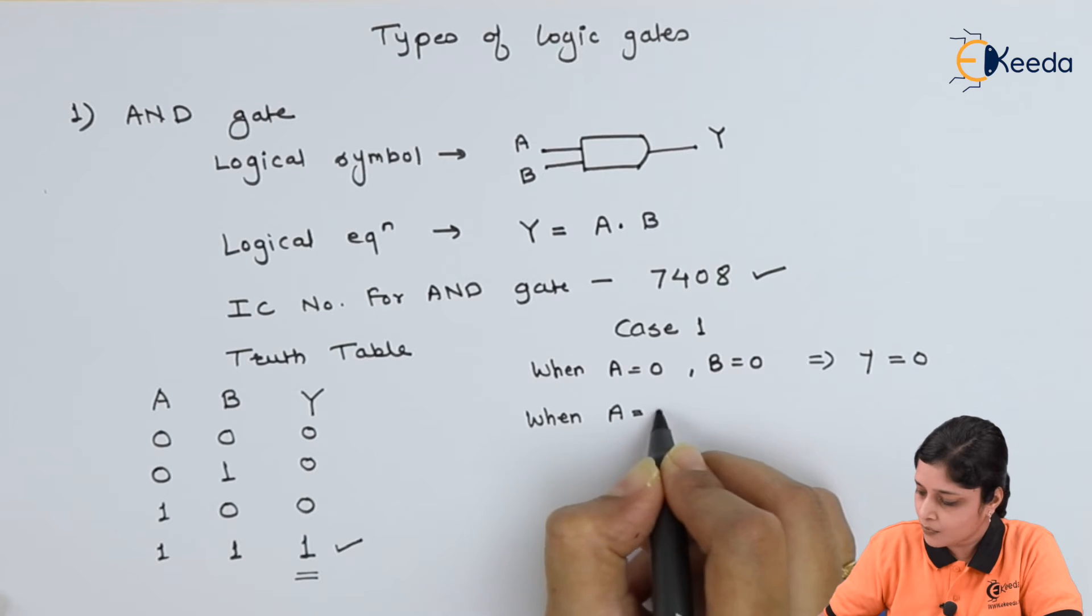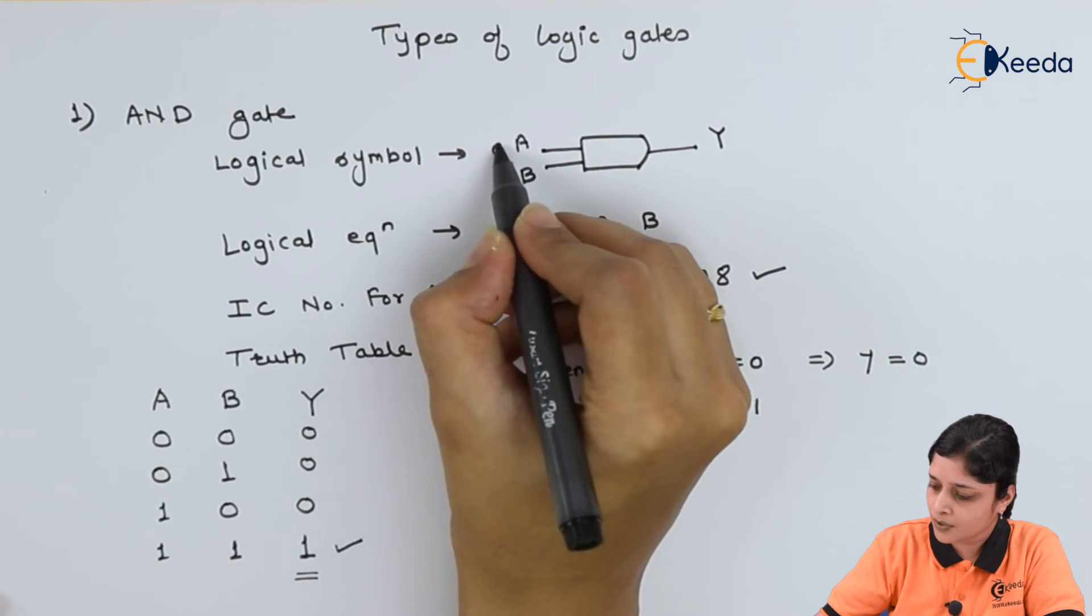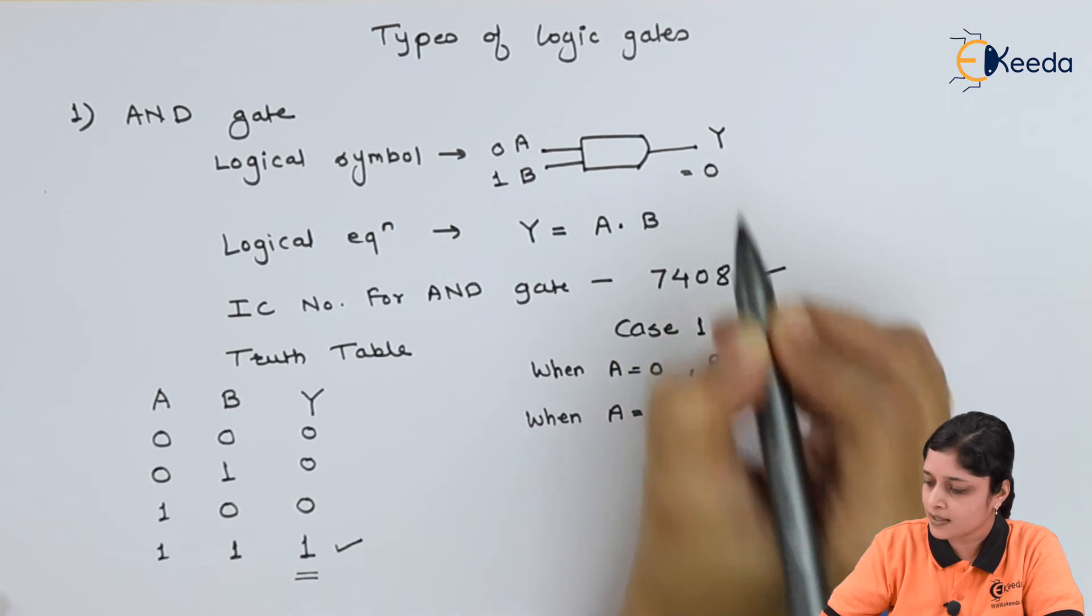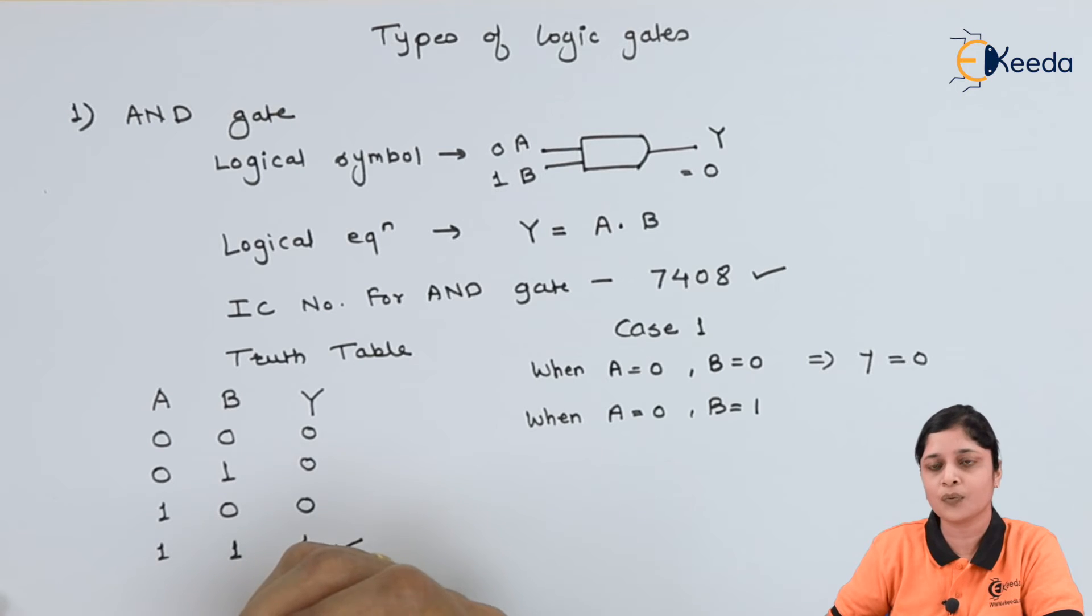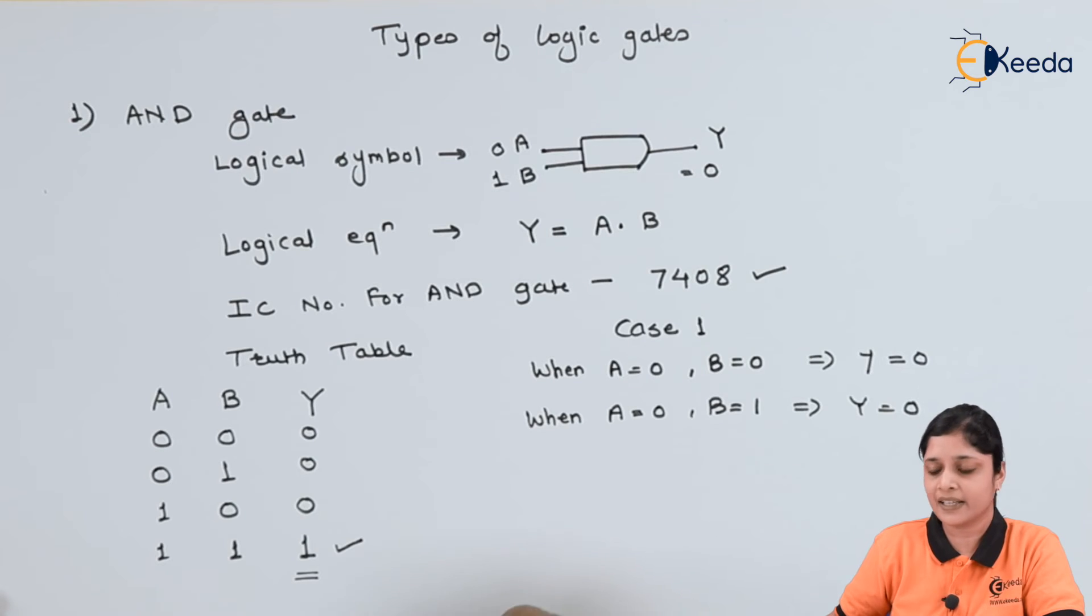When A equals to 0, B equals to 1, if you put here A equals to 0, B equals to 1, then output you will get as 0 because 0 dot 1 is 0. This is the second case.